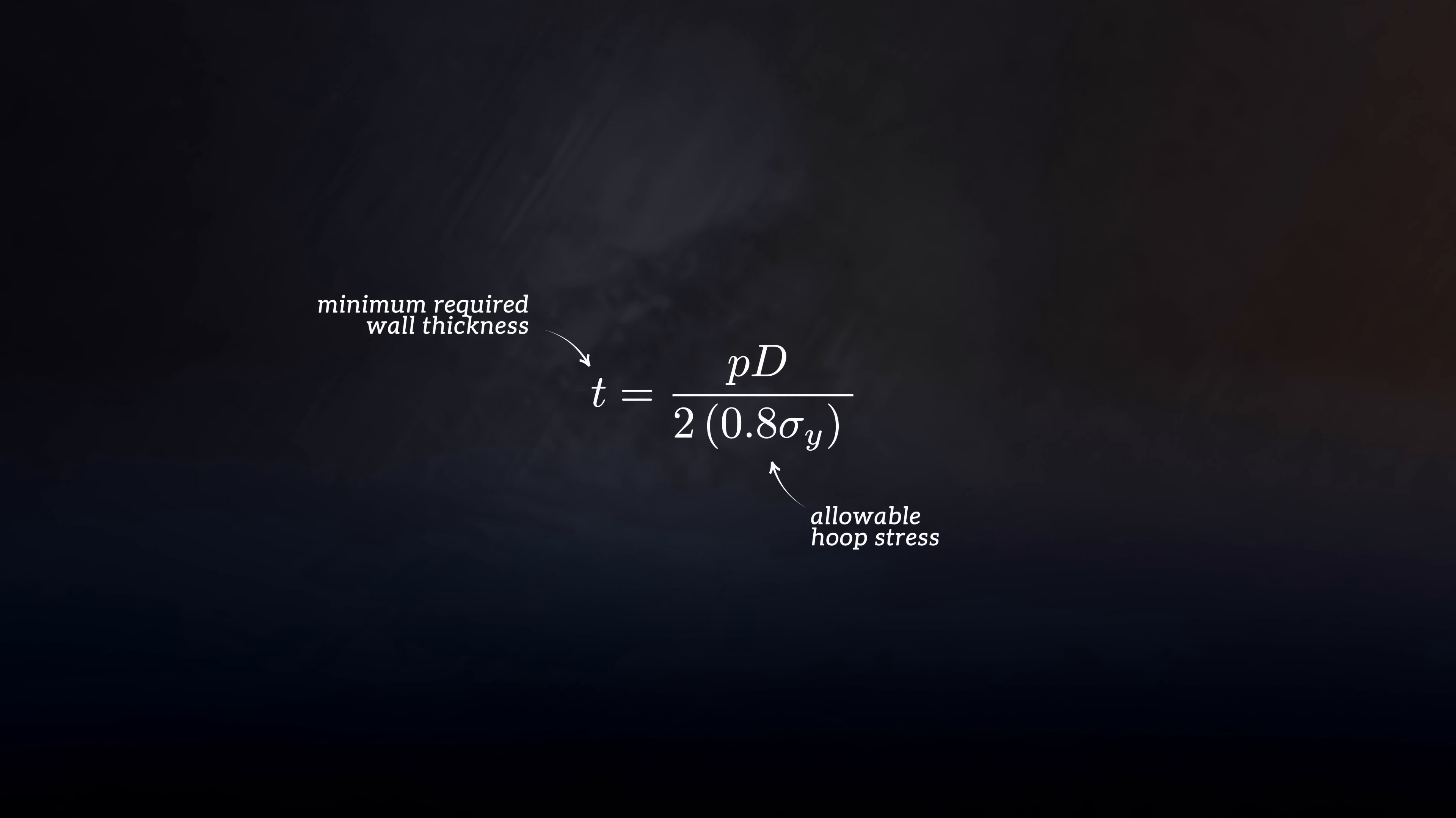In welded vessels, an additional factor, the joint efficiency factor E, is often applied to account for the potentially reduced strength at longitudinal welds. It usually has a value between 0.7 and 1. A corrosion allowance is also often added to the calculated minimum thickness to account for material loss over the service life of the vessel. This is a fundamental equation used in the design of pressure vessels.